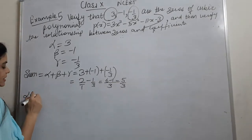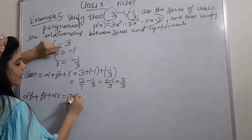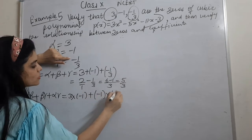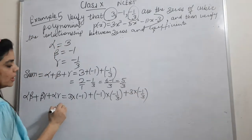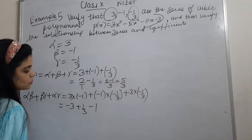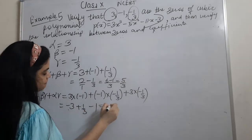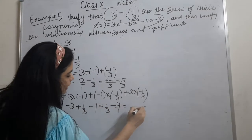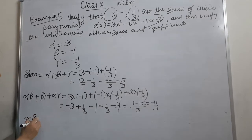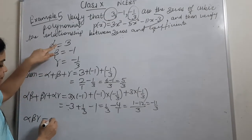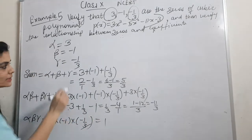Now calculate alpha·beta plus beta·gamma plus alpha·gamma: that is 3×(minus 1) plus (minus 1)×(minus 1/3) plus 3×(minus 1/3) = minus 3 plus 1/3 minus 1. This gives 1/3 minus 4, which equals 1/3 minus 12/3 = minus 11/3.